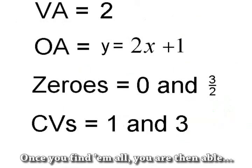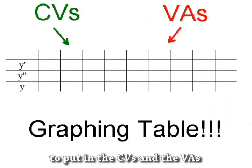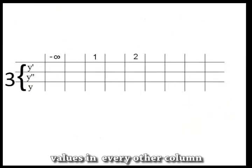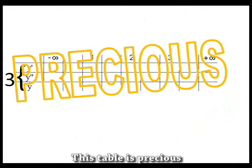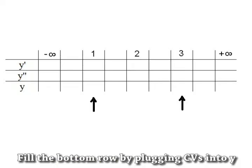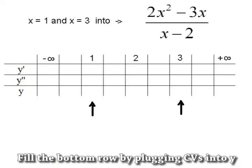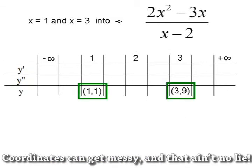Once you find them all, you are then able to put the CVs and the VAs in a graphing table. Three rows, values in every other column. This table has pressures like the rain, what's the problem? Fill the bottom row by plugging CVs into y. Coordinates can get messy, and that ain't no lie.